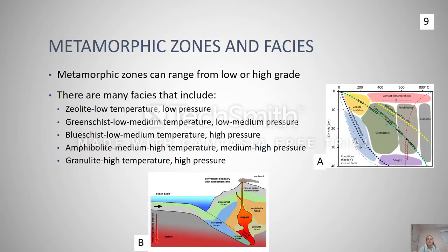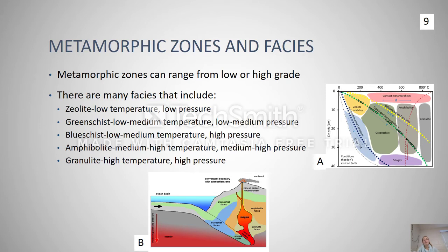Metamorphic facies and zones can range from high to low grade. Metamorphic zones gradually move from high to low grade, and each zone is only stable for a certain type of metamorphism. Metamorphic facies are assemblages of minerals that form under certain pressures and temperatures. The main facies include zeolite, greenschist, blueschist, and granulite. As you can see in both diagrams, each facies has a different temperature and pressure range and produces something different at the end of the process.